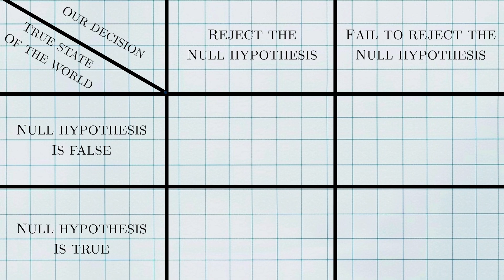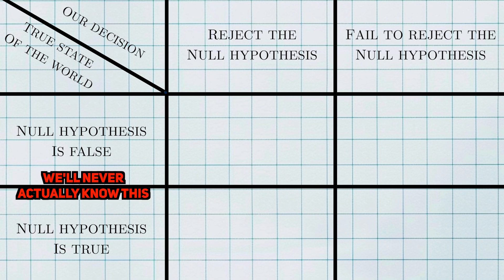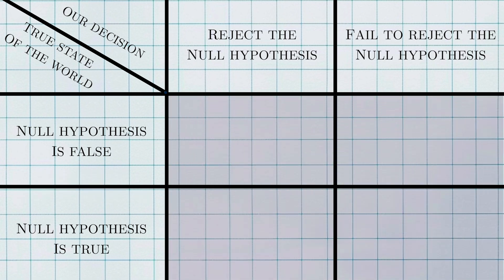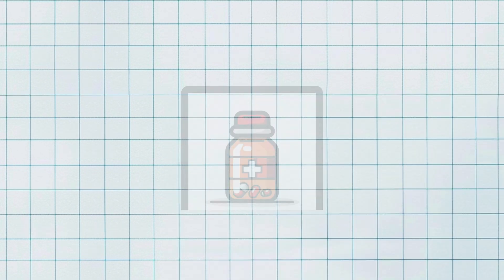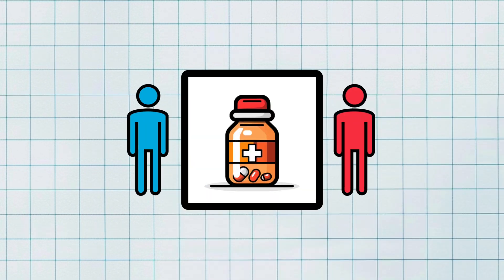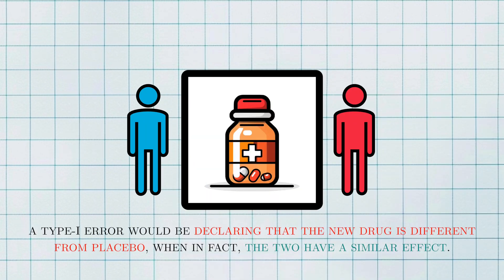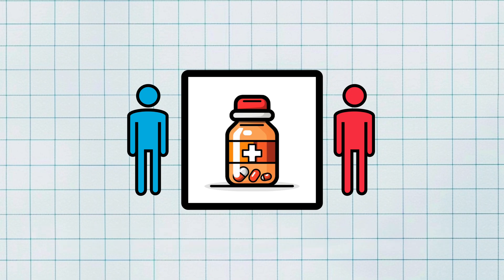We don't know and we'll never know what the actual truth is, but we still need to define these two states. And what we get with our decision and the true state of the world is this decision matrix. A type 1 error happens when we reject the null hypothesis when in fact the null hypothesis is actually the true state of the world. Going back to my example about the clinical trial, a type 1 error would be declaring that the new drug is different from the placebo when in fact the two have the same effect. You might phrase this as a false positive decision.